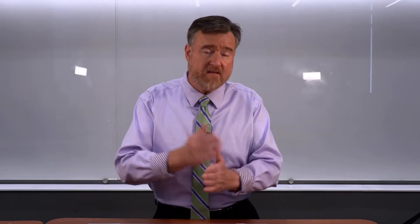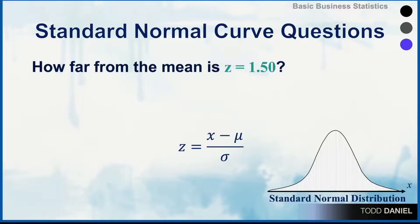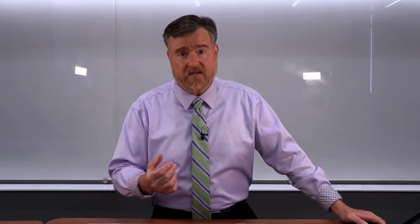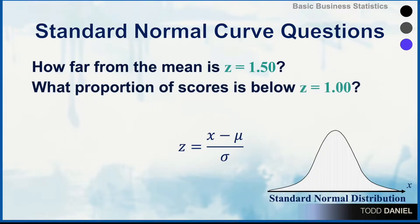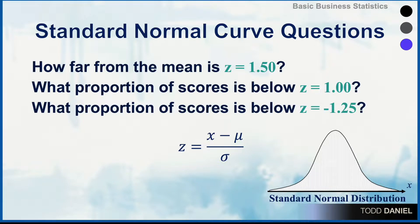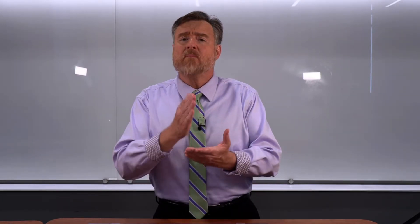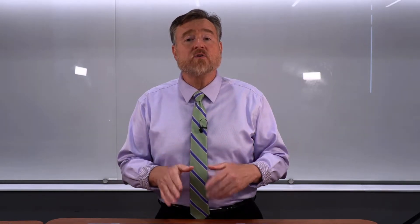We can use this information to answer questions about the proportion of scores between the mean and specific values. For instance, how far is the mean from a z-score of 1.50? Or what proportion of scores is below a z of 1.0? Or below a z of negative 1.25? To answer any of these questions, we need the empirical rule, the fact that half of scores are below the mean, and all the finer gradations of probabilities between any specific point and the mean. For that, we're going to use a z-table.